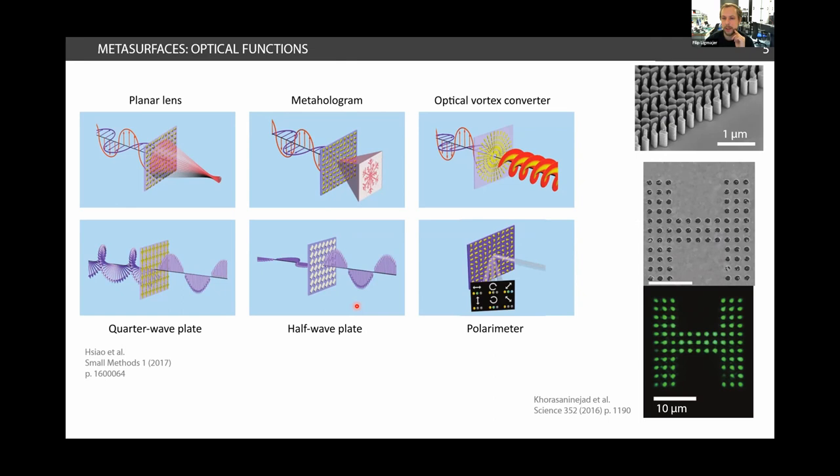Here on the right, you can see a very famous example from Capasso's group from Harvard, where they were able to produce very thin lenses based on very thin layers of nanostructured titanium dioxide and their resolution was comparable or even better than conventional microscope objectives, which are of course bulky and quite heavy and large.